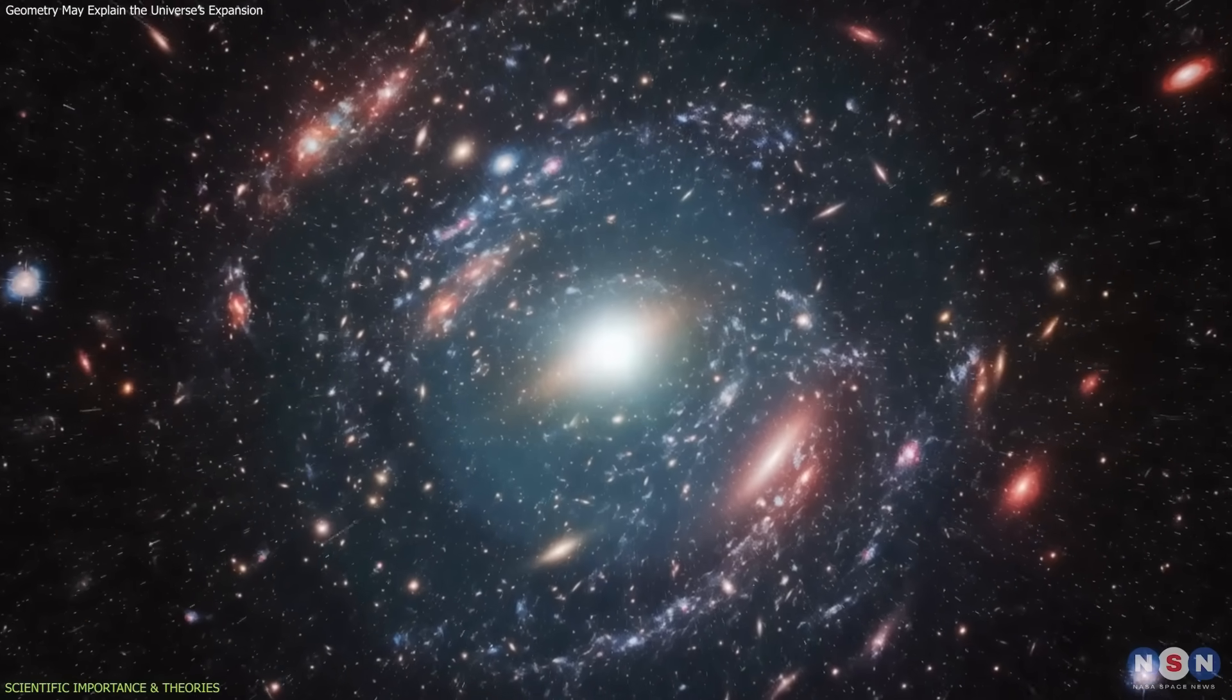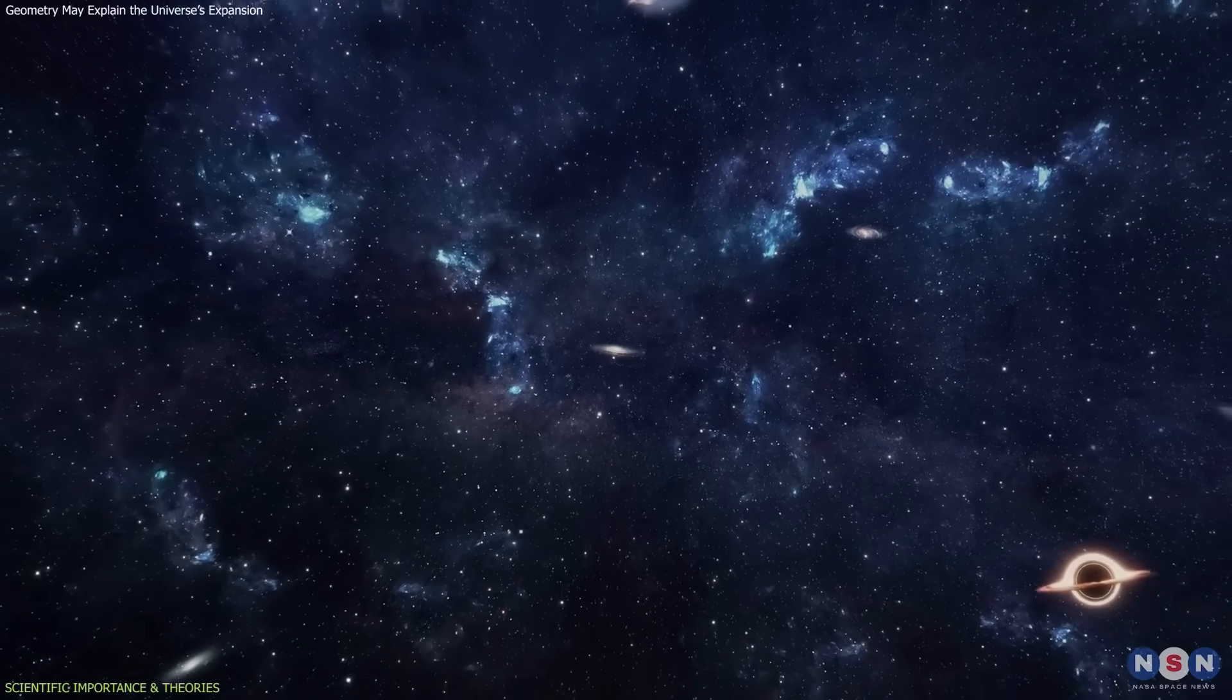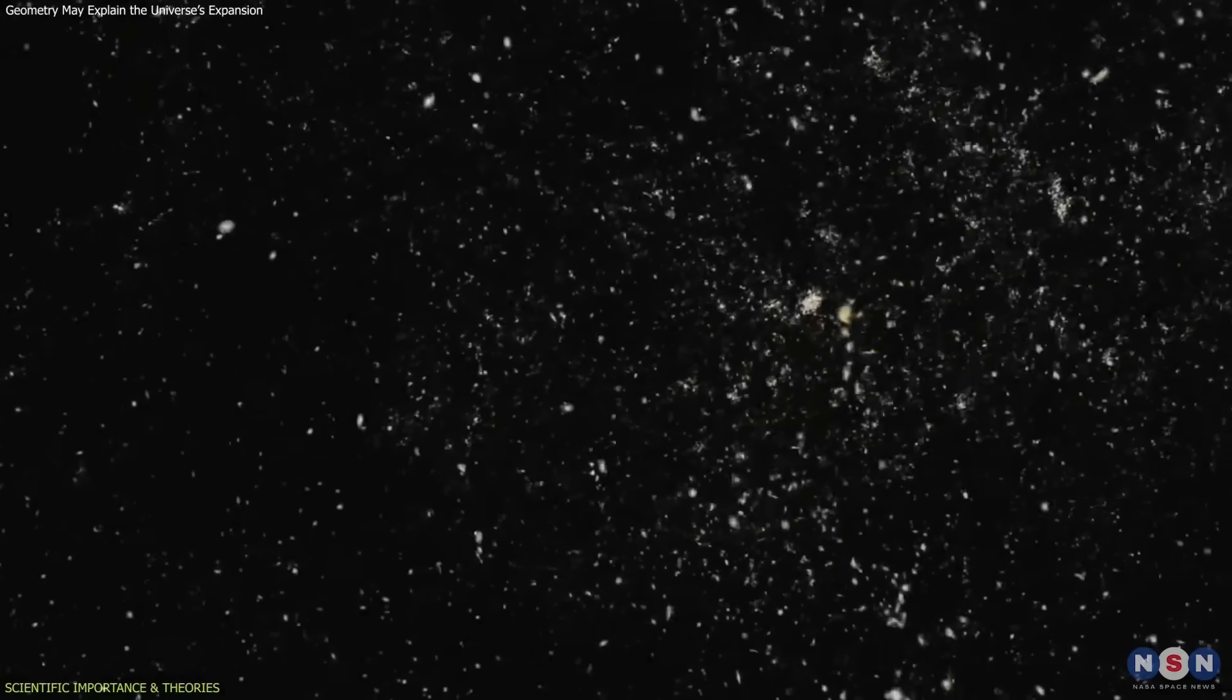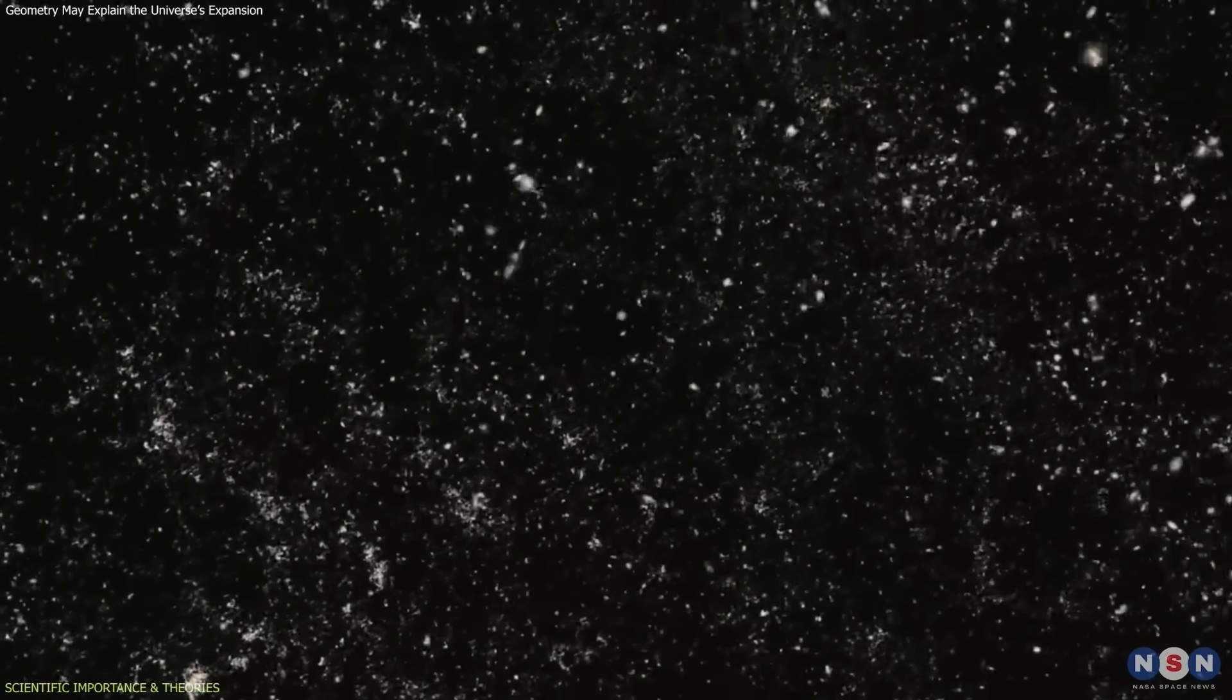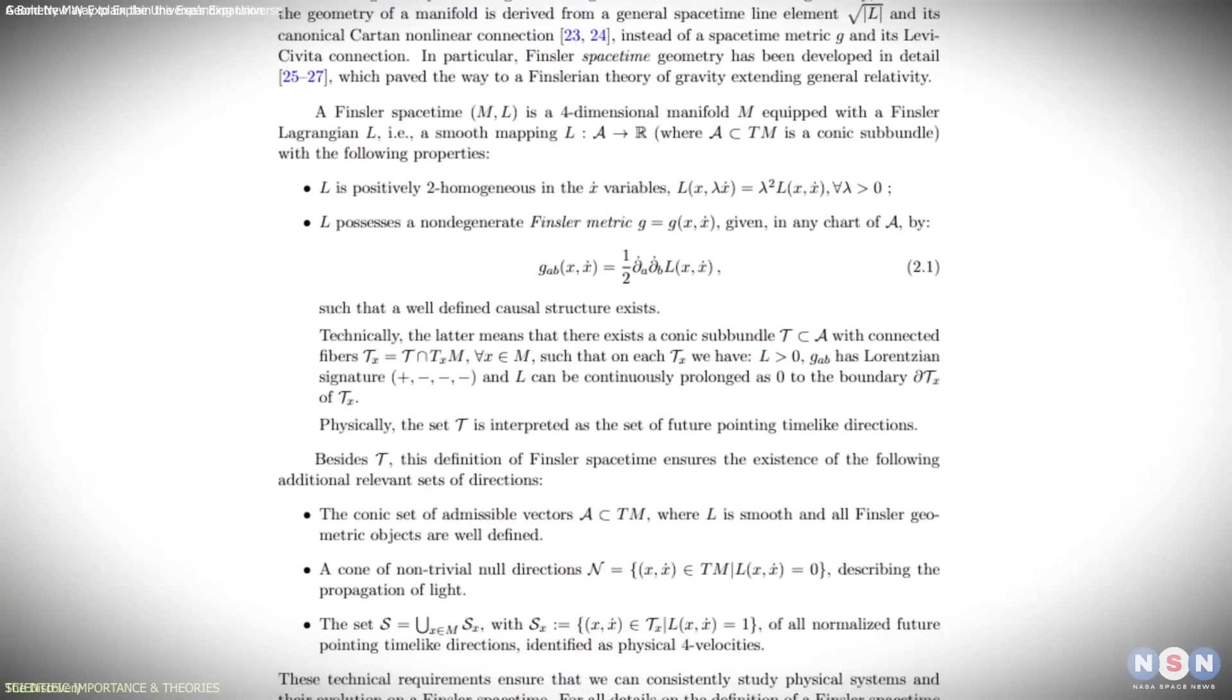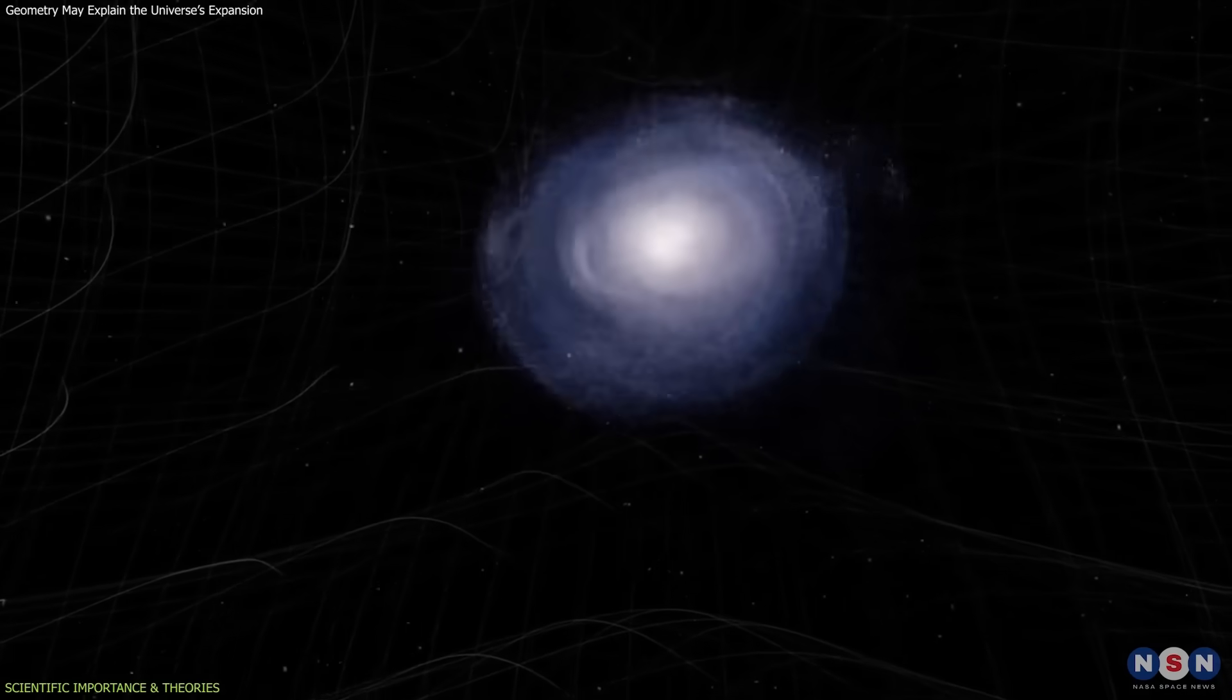This fits into a broader scientific effort to reconsider the foundations of cosmology. Over the years, several alternatives have been proposed, from modified gravity theories to quantum vacuum models. Many of these struggle to fit data or conflict with precise local tests of relativity. Finsler geometry is different. It extends Einstein's framework in a mathematically rigorous way, modifying cosmic behavior on large scales, while leaving local physics mostly untouched.